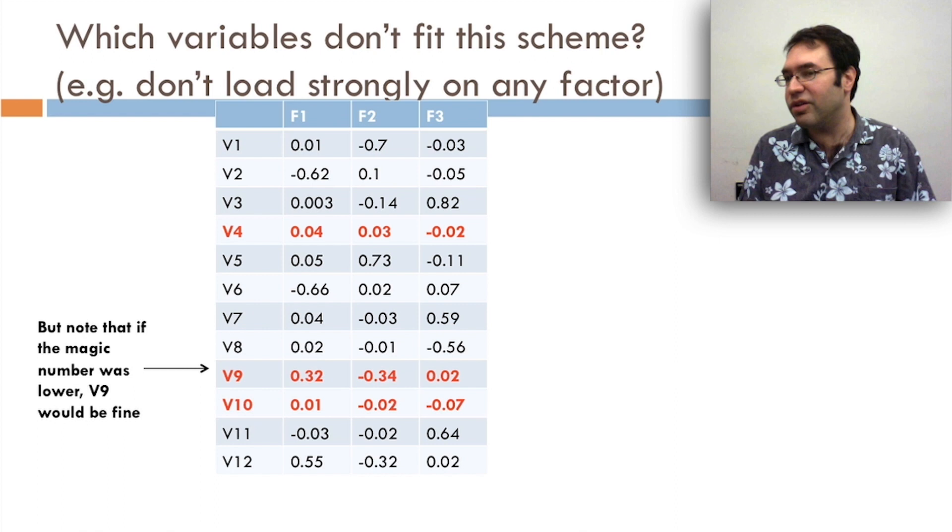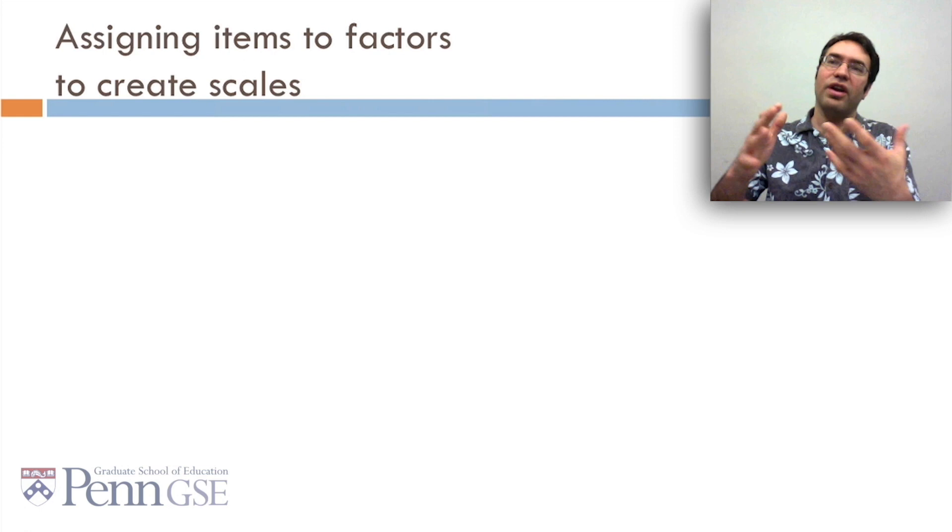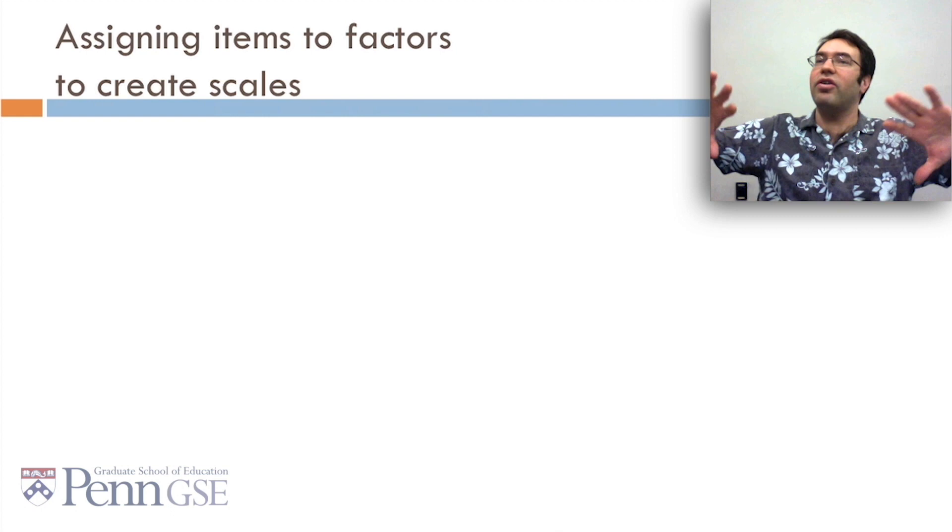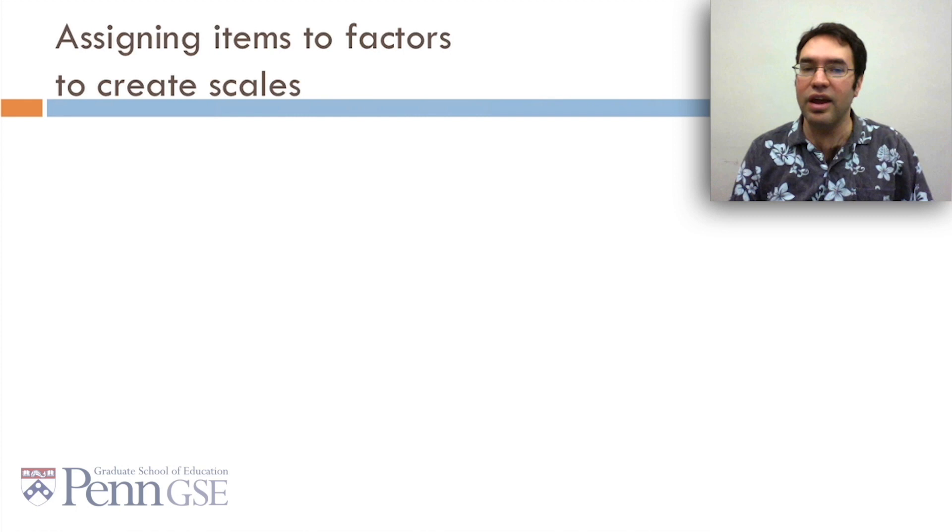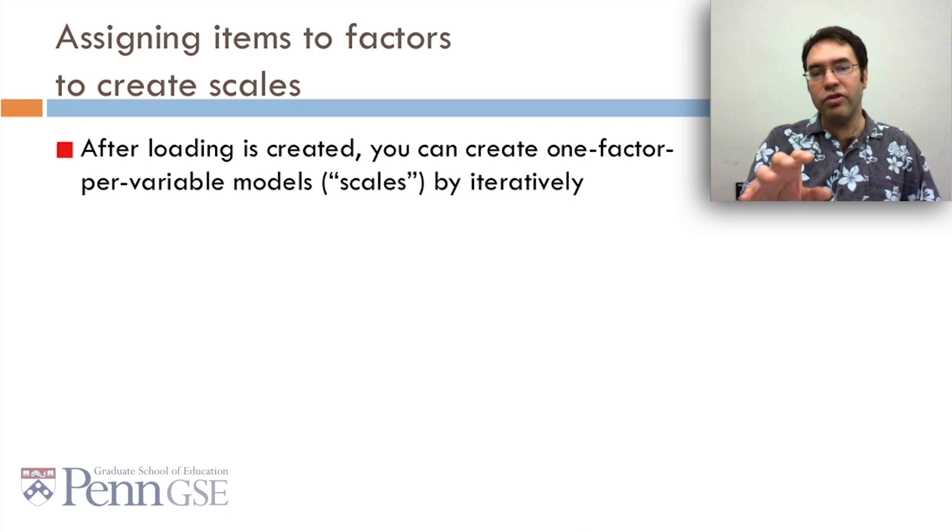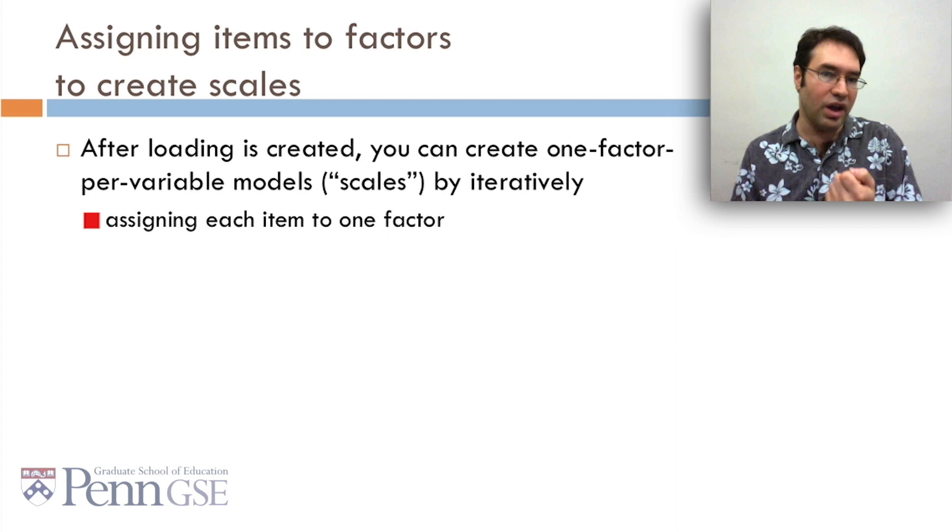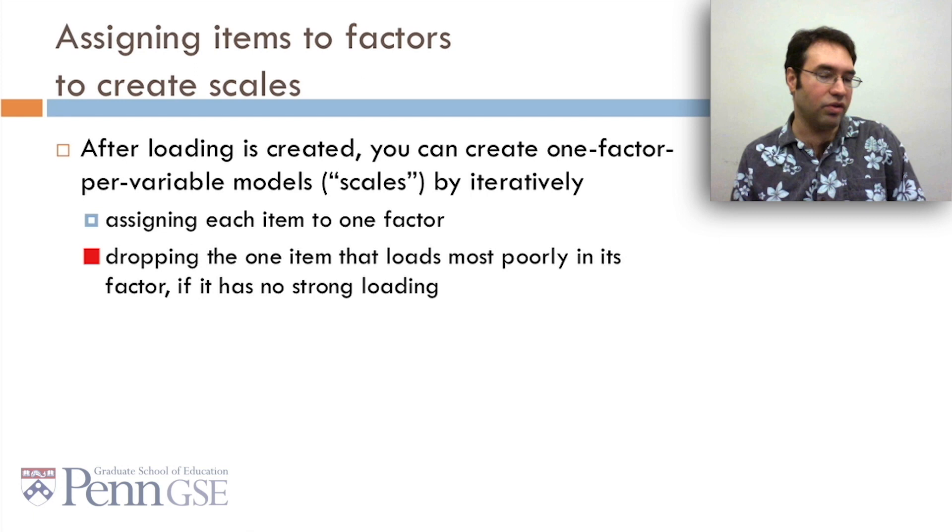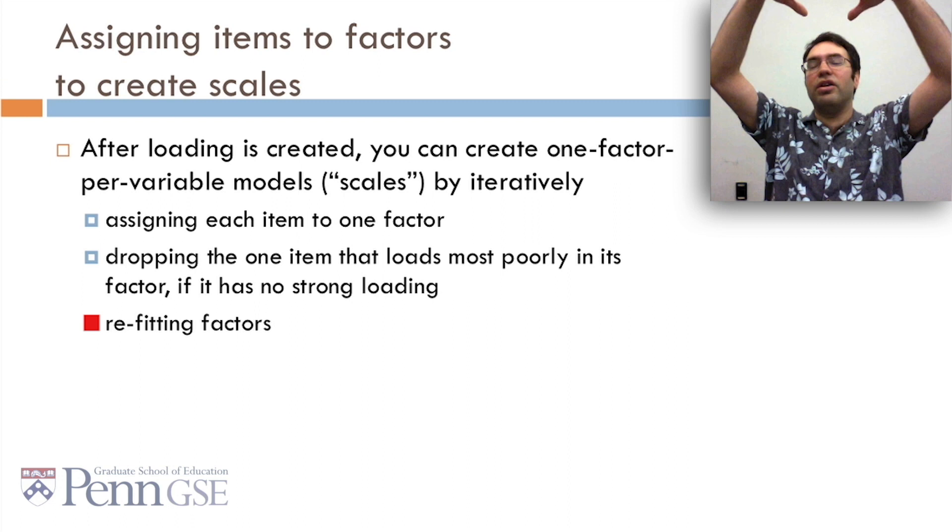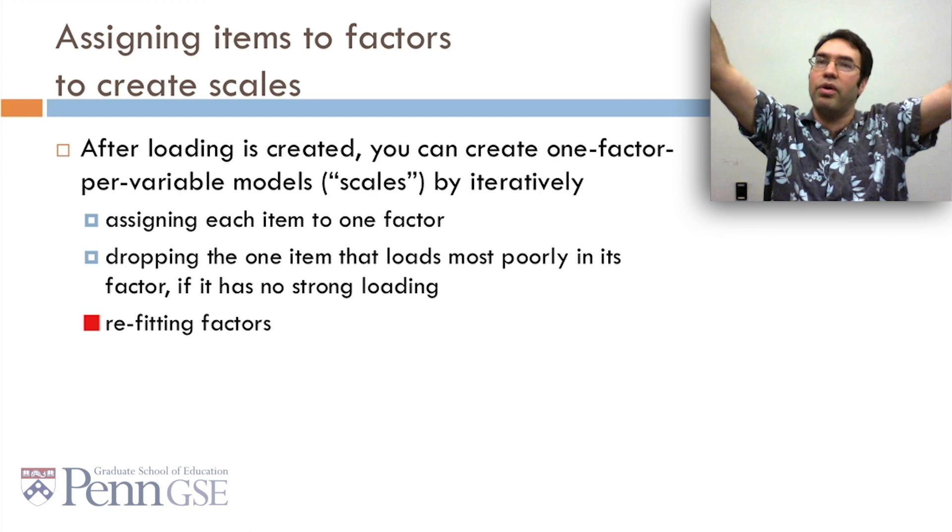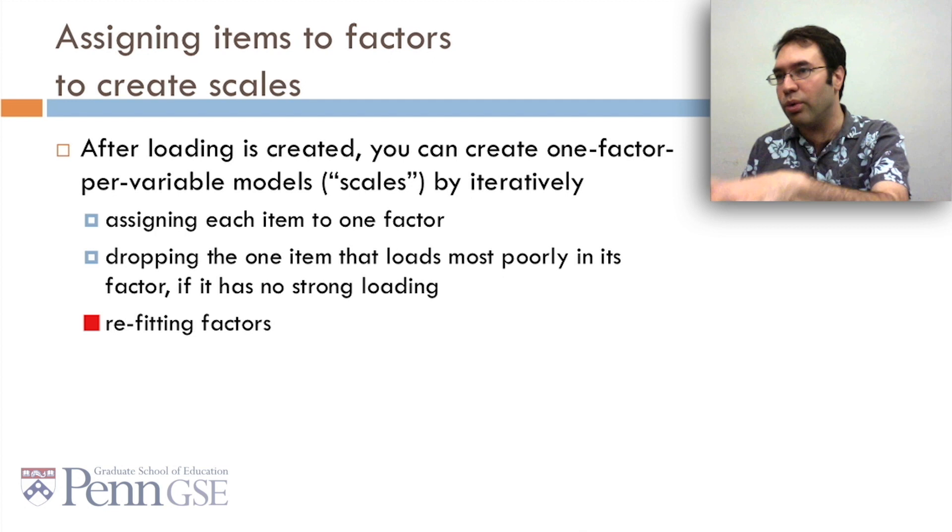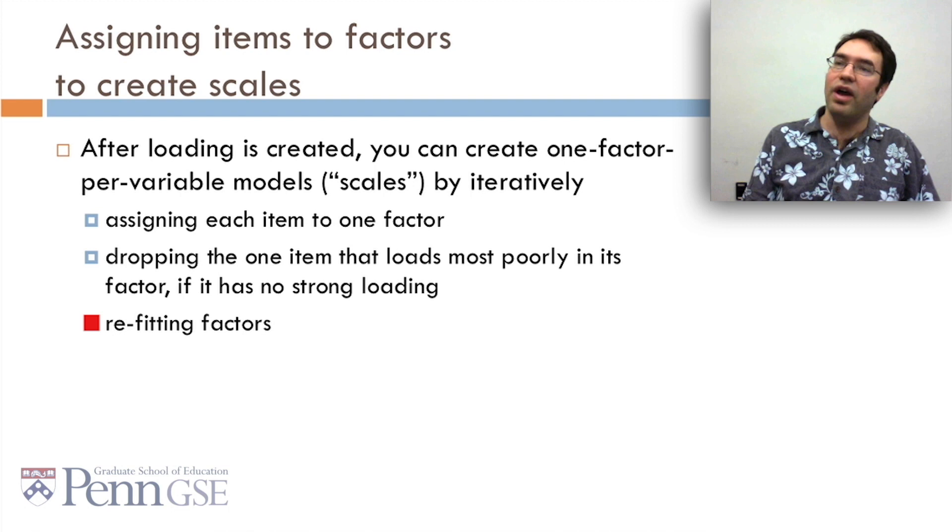So, all right, we've got our factors. How do we create scales for, say, a questionnaire? Or for saying, okay, I don't actually want to calculate across my 10,000 variables every time. I just want to know which variables to calculate across. In that case, we can actually create scales by assigning items to specific factors. So after the loading is created, you can create one factor per variable models, called scales, by iteratively, that's just to say, repeatedly doing this. You assign each item to one factor, and then you drop the one item that loads most poorly in its factor if it has no strong loading, and then you refit the factors. So, in other words, you're going to take every single item, you're going to say every item is going to go into one factor, and only one factor, whichever one it's most strongly loaded on. And then if there are any that don't have strong loadings, you're going to take the very worst fitting one, toss it out, and refit the factors. And you'll keep doing this until every single item is in a scale and is strongly loaded.